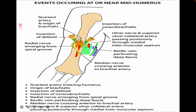Other events at the middle one-third of the humerus include: a nutrient artery entering the humerus, origin of the brachialis muscle, insertion of the deltoid, insertion of the coracobrachialis, the radial nerve emerging from the spiral groove passing from the posterior compartment to the anterior compartment, the basilic vein perforating the deep fascia, the median nerve crossing from lateral to medial side, and the ulnar nerve with the superior ulnar collateral artery piercing the medial intermuscular septum to the posterior side.